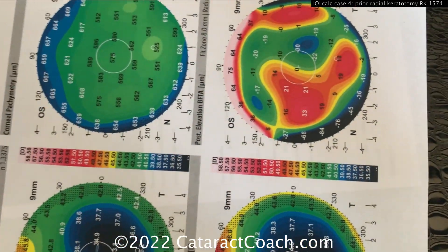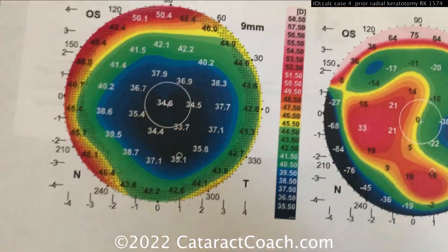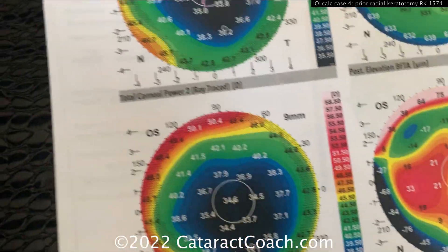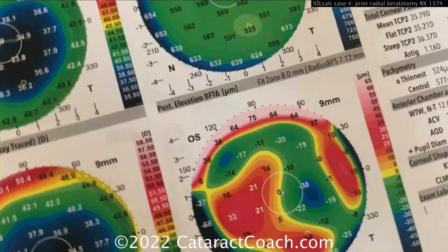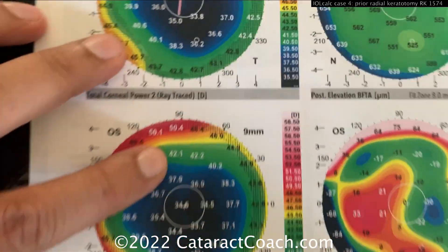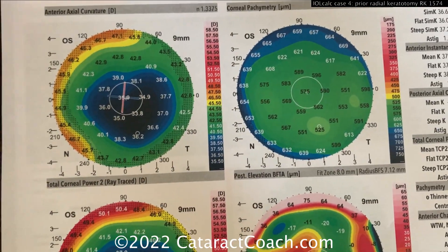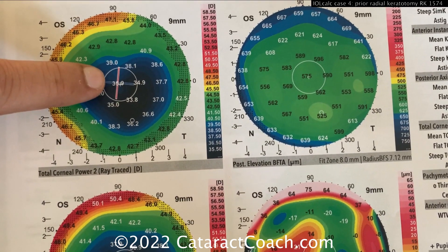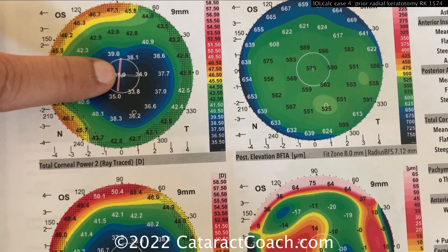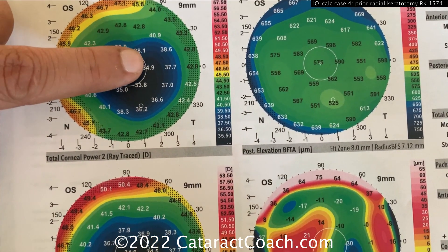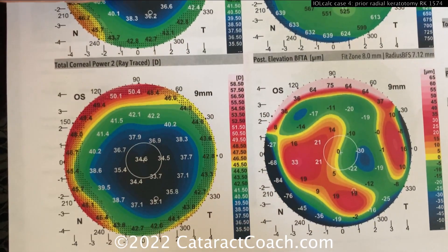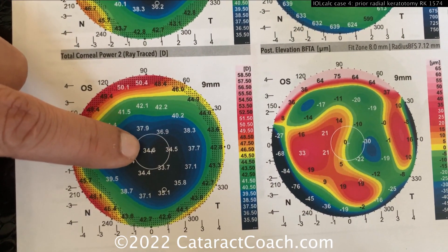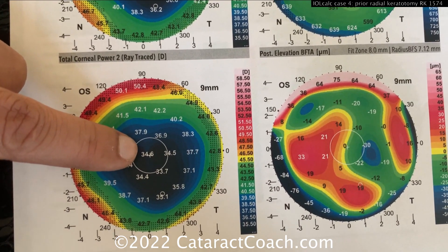Moving on to the left eye tomography: the curvature is very flat here — 35 diopters centrally, 34.9, 33.8. The total corneal power ray trace comes in at about the 34.6 range.